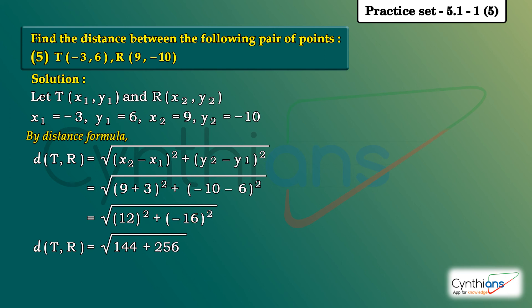Great. So the distance of T comma R is equal to square root of 144 plus 256. Now tell me, 144 plus 256 is 400. So we have got this next step as equal to square root of 400.